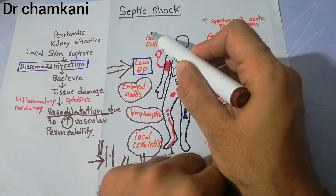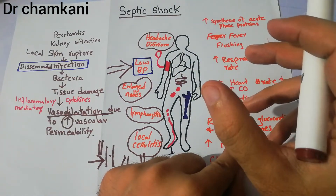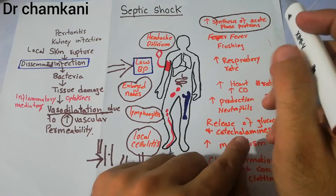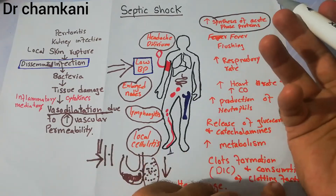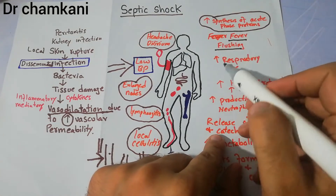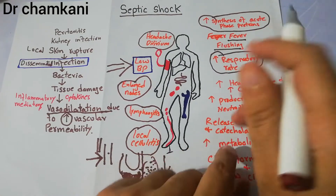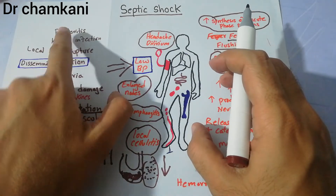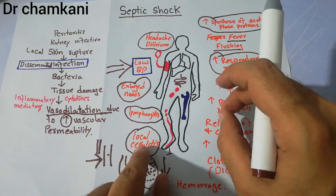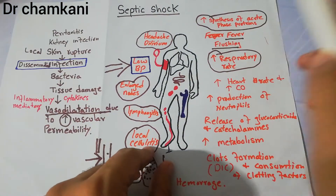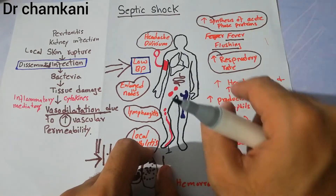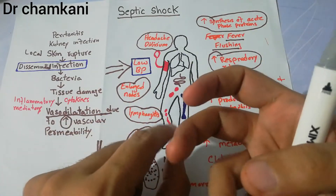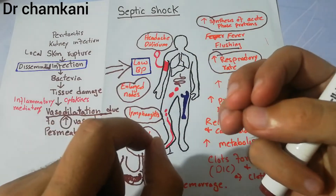Some patients may have headache and delirium. Most patients will have increased synthesis of acute phase reactants like ferritin, fever, flushing, and increased respiratory rate. Depending upon the predominant system involved, if sepsis starts from the skin the most prominent feature will be cellulitis; if from the lungs, respiratory rate will be very high. Initial symptoms will involve the organ from where the spread of infection started.